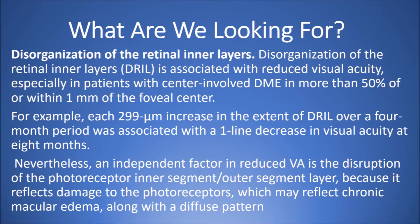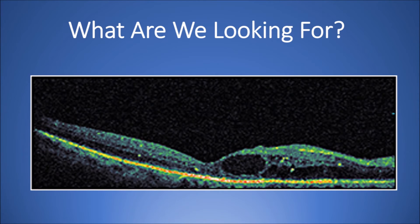An independent factor in reduced vision is disruption of the photoreceptor inner segment-outer segment layer, because it reflects damage to the photoreceptors, which may reflect chronic macular edema along with diffuse atrophy. Here is an example of a cross-sectional OCT image that shows disorganization of the retinal inner layers with a large cyst and disruption of the photoreceptor inner segment-outer segment layer. This patient may not have an excellent prognosis after treatment.